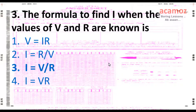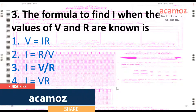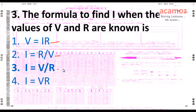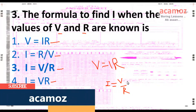The formula to find I when the values of V and R are known. The options are: V = IR, I = V/R, or I = VR. As we know from Ohm's law, V = IR. But since we need to find the value of I, we rearrange to get I = V/R. That is the correct answer.